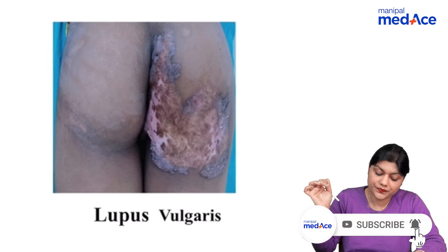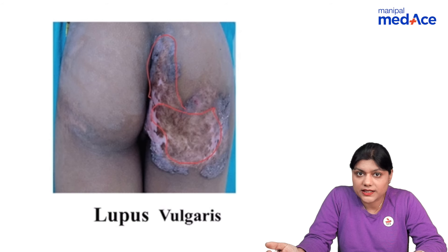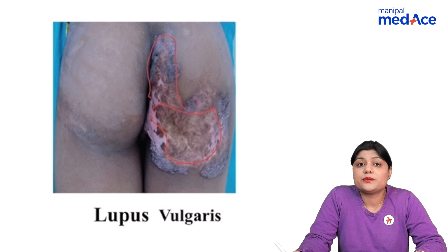Next we have lupus vulgaris — an erythematous plaque with an advancing edge and central scarring. It can be transmitted both endogenously and exogenously. Remember, central clearing is seen in tinea, and central crusting is seen in leishmaniasis.